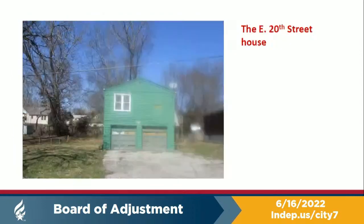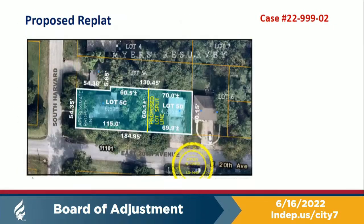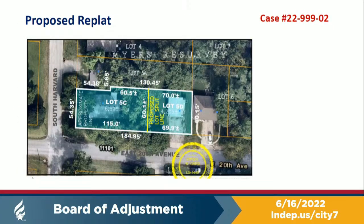Going back to the plat, proposed lot 5C needs a variance of 405 square feet, and lot 5D needs a variance of 2,795 square feet instead of the 7,000 square feet required.